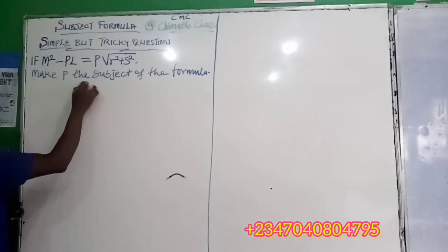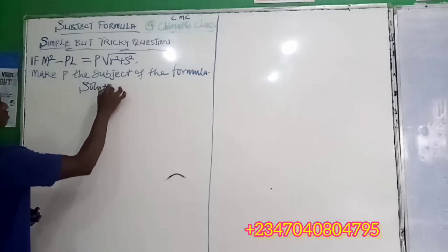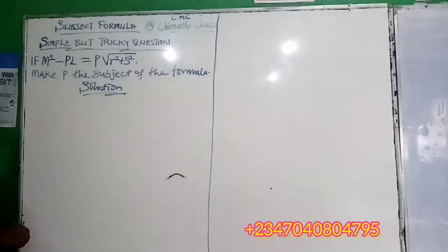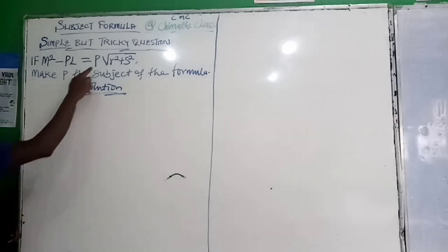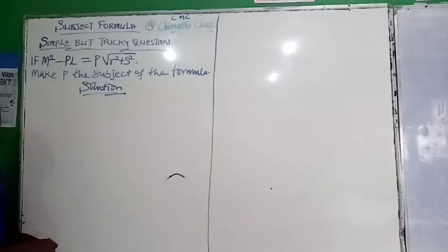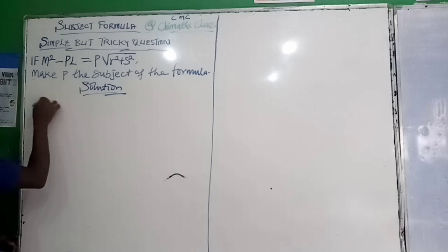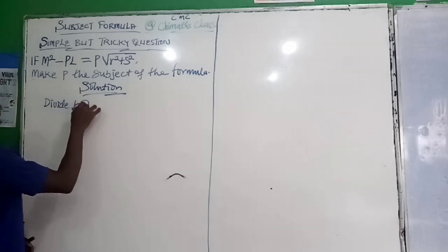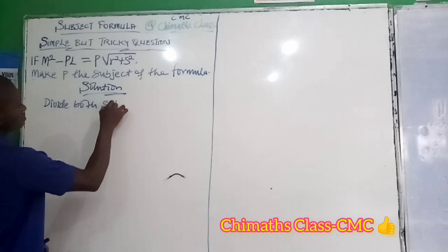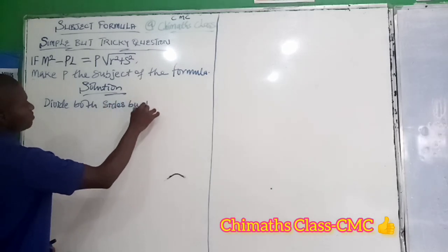Solution. Since here is multiplication, this is simple and I say P times R squared plus S squared. We are going to divide both sides by P.